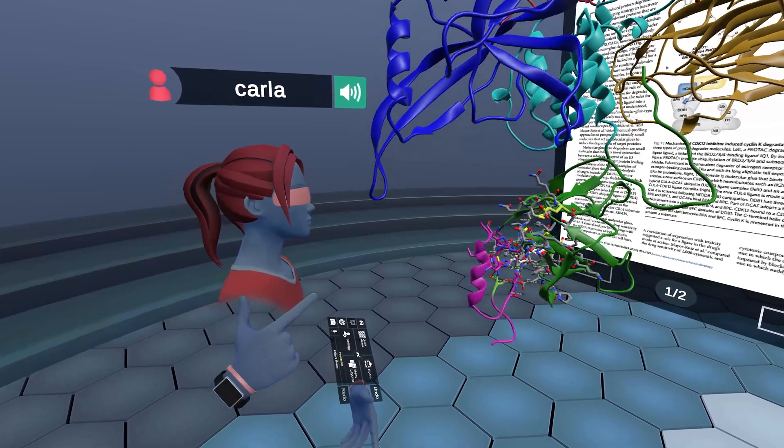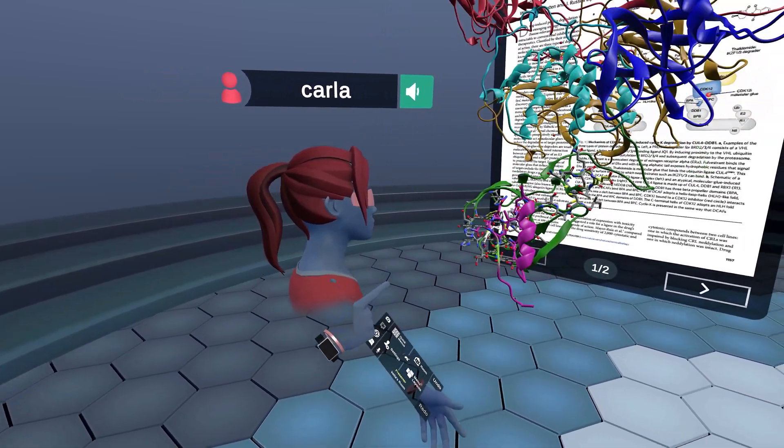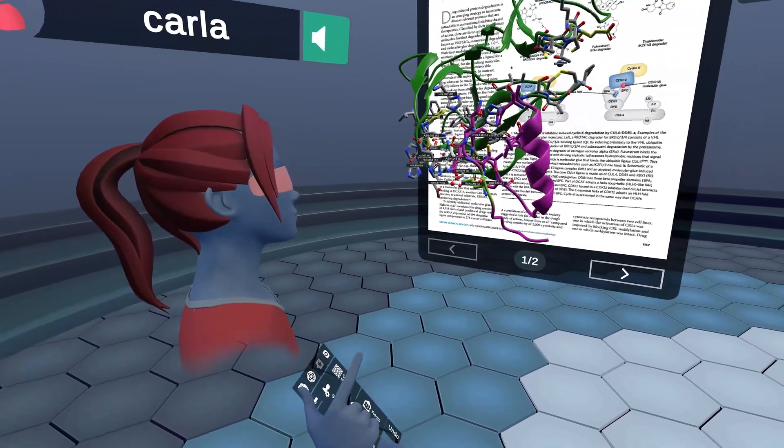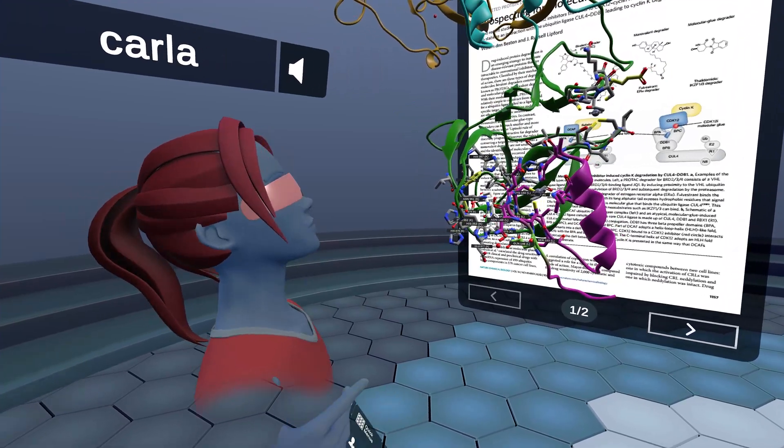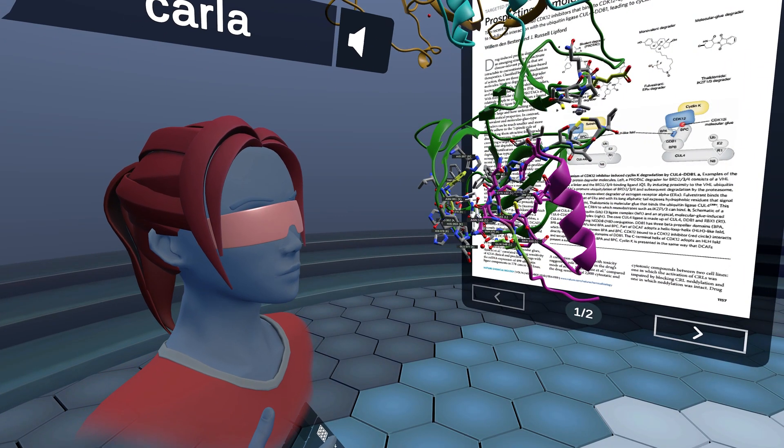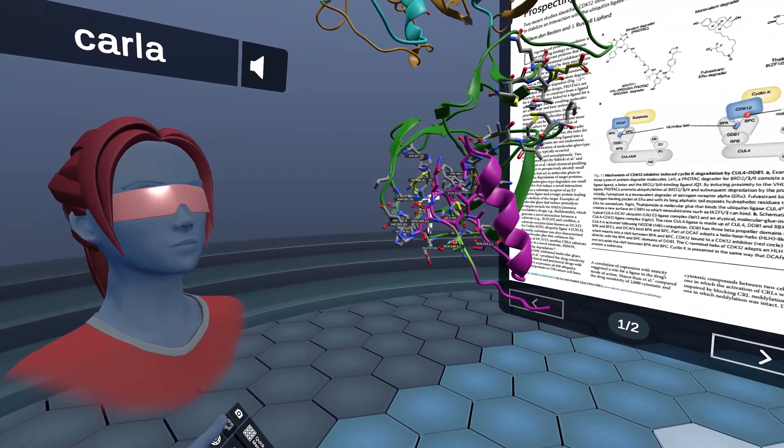Now we're going to take a look at our last X-ray structure, also by the same group, but published in Science in 2018. This is of pomalidomide with cereblon and DDB1, but also in complex with the zinc finger binding motif of Ikaros.